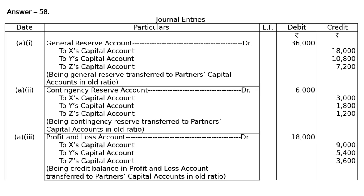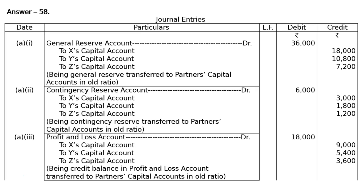Third entry: Profit and Loss Account debited — it is a credit balance, hence debited for cancellation by Rs. 18,000. To X's Capital Account Rs. 9,000, To Y's Capital Account Rs. 5,400, To Z's Capital Account Rs. 3,600. Being credit balance in Profit and Loss Account transferred to partners' capital accounts in old ratio. This is an accumulated profit transferred to old partners' capital accounts in old ratio.